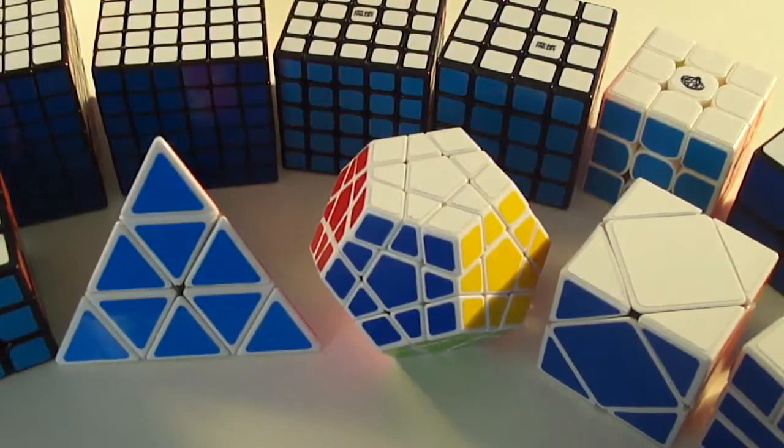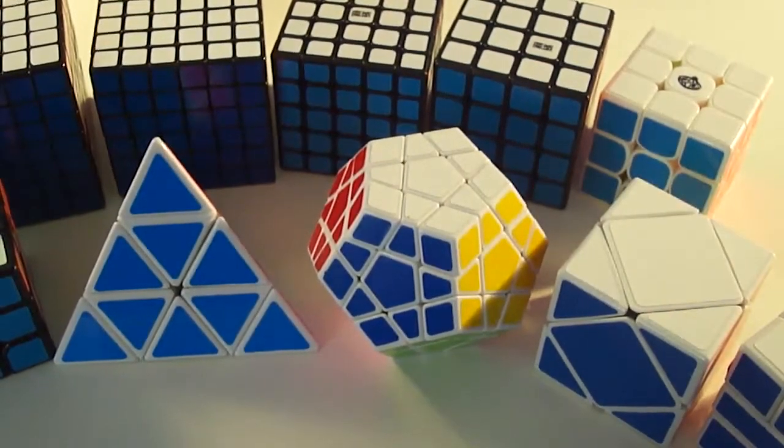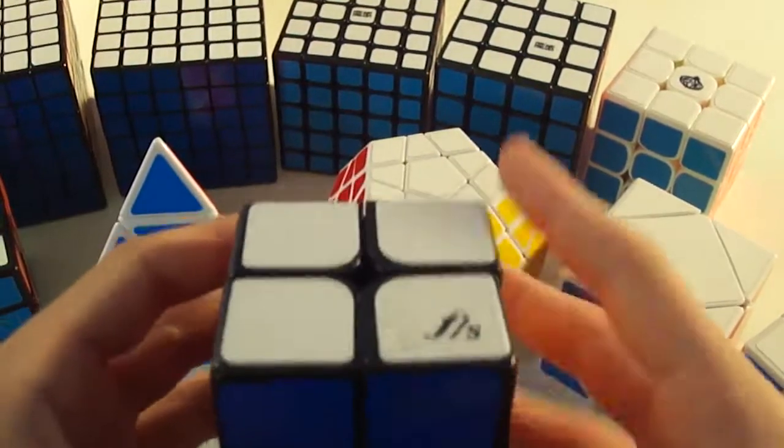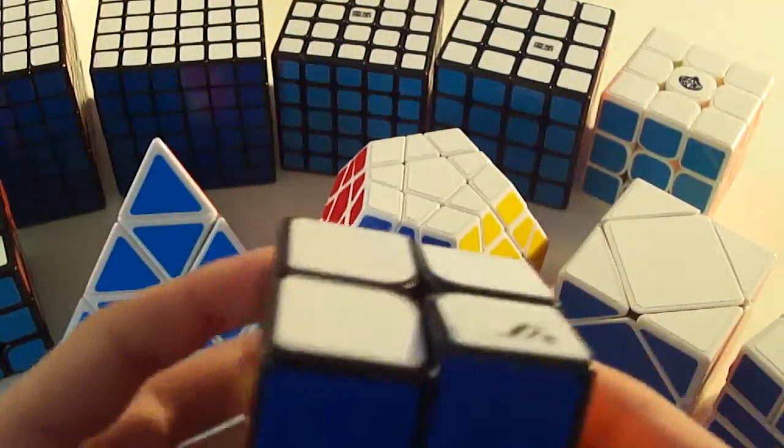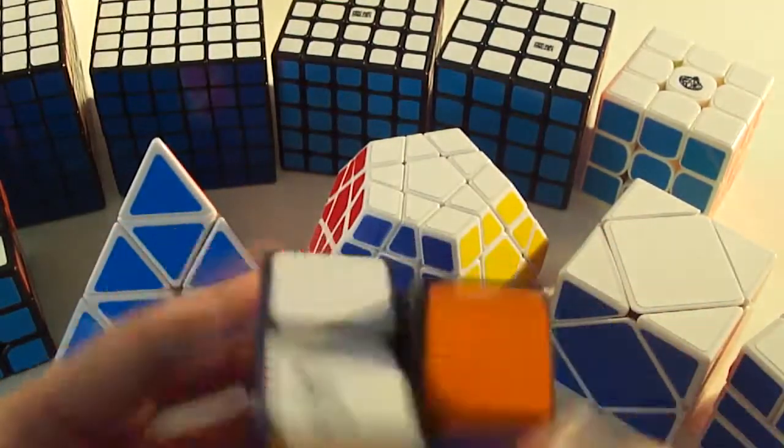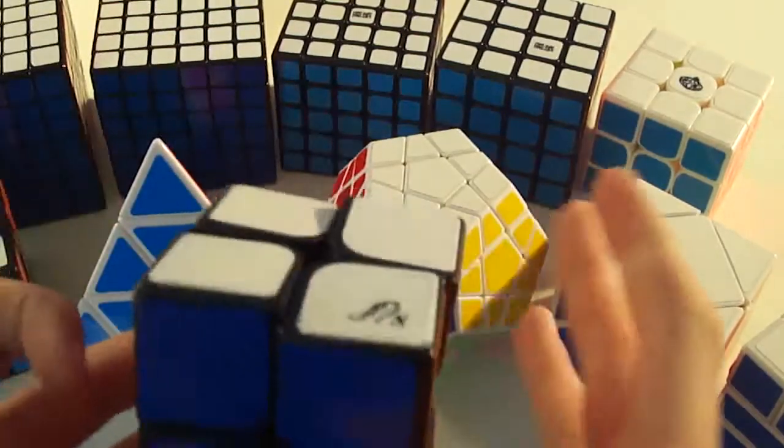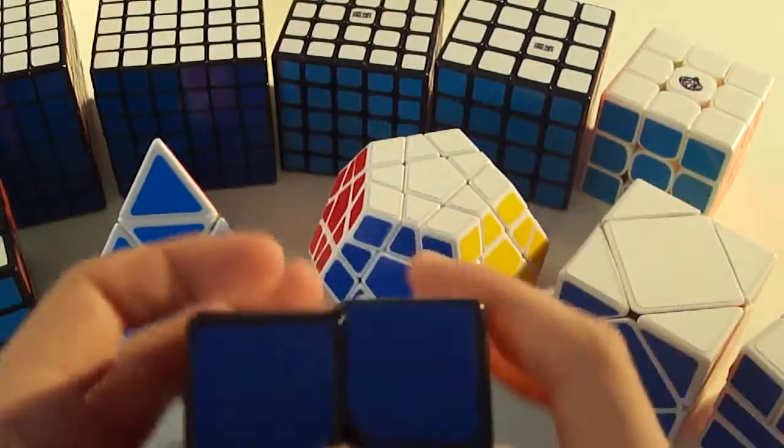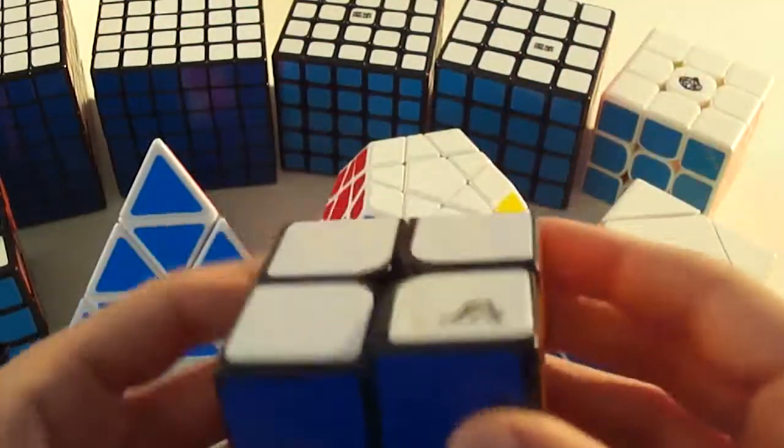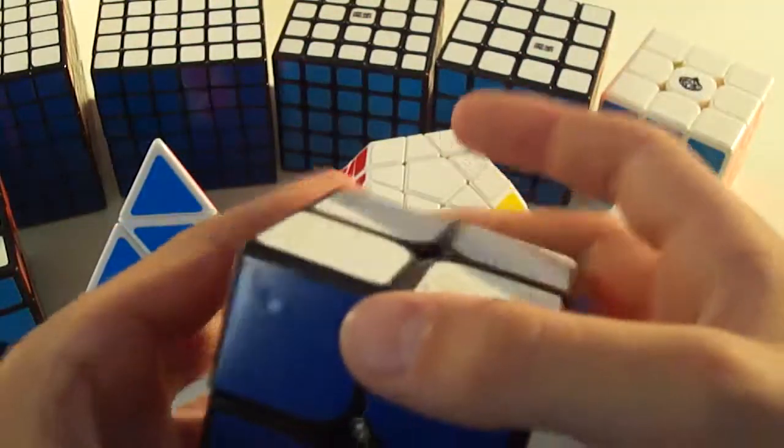First off, for 2x2, I use the Fang Shi Shuang 55mm. I have replaced the stickers with these half-brights from The Cubicle. I'm pretty sure this is the same as my main from the last video.